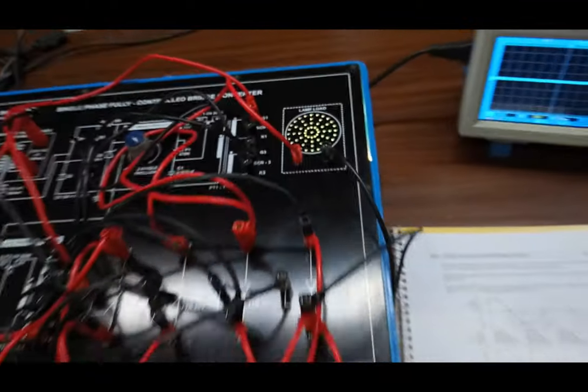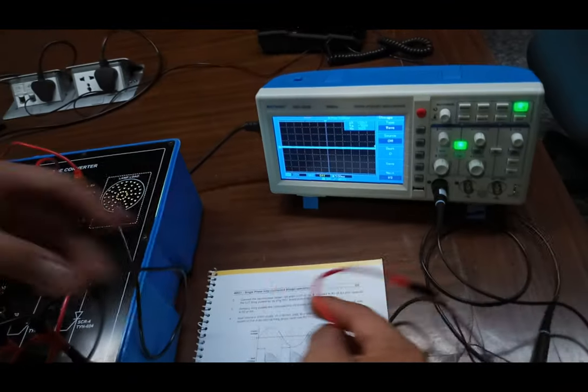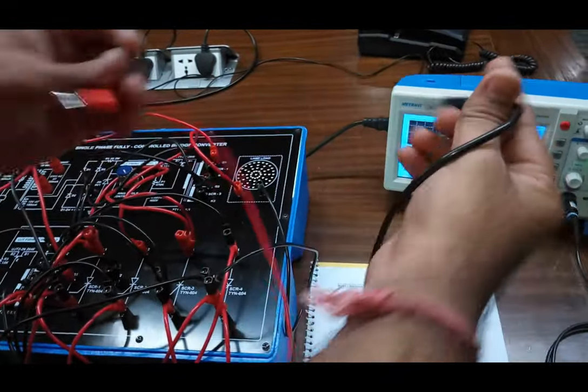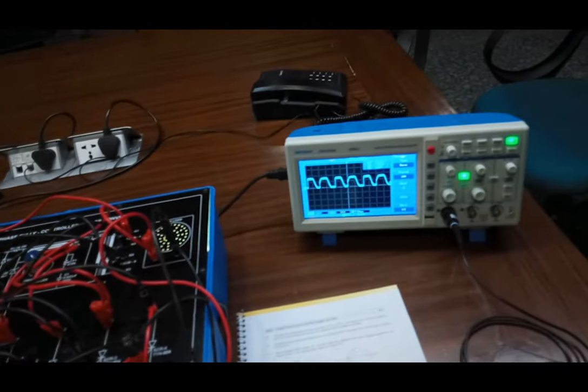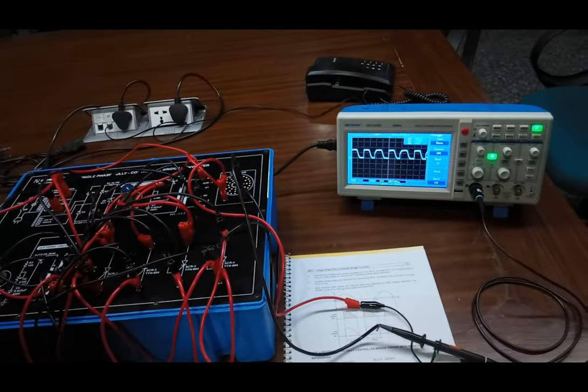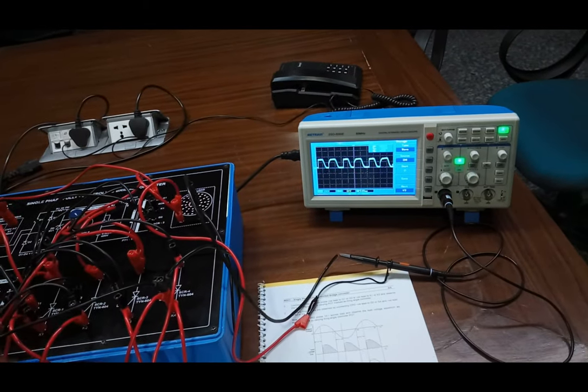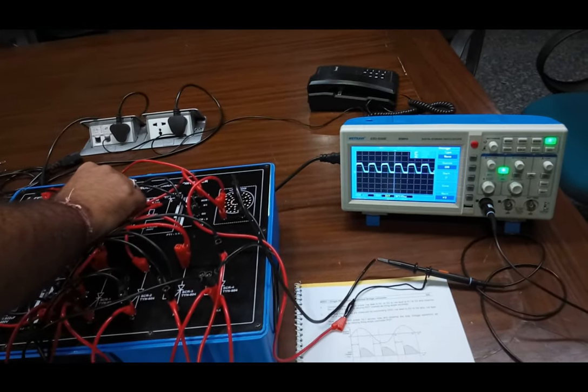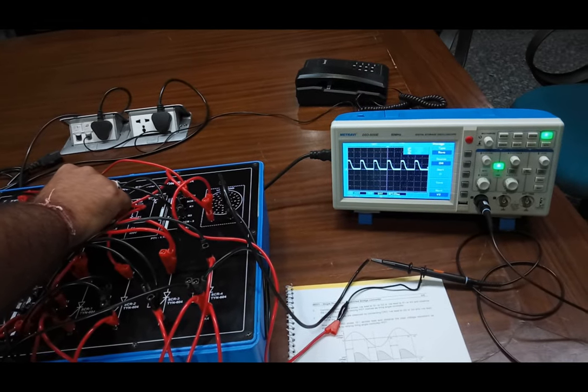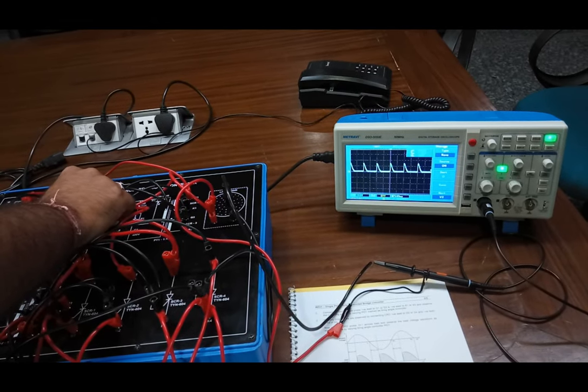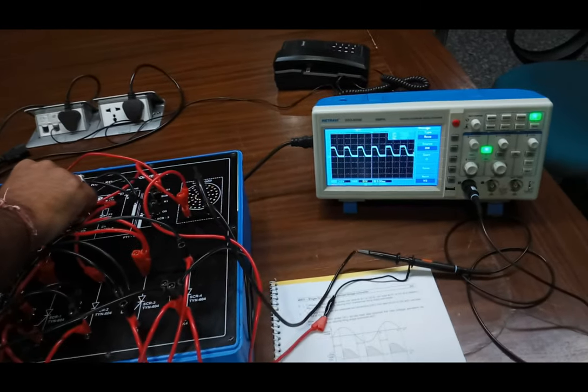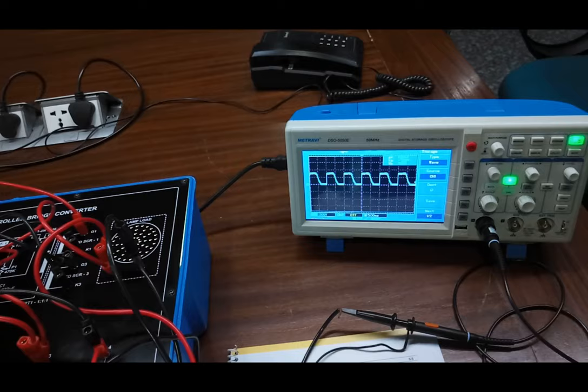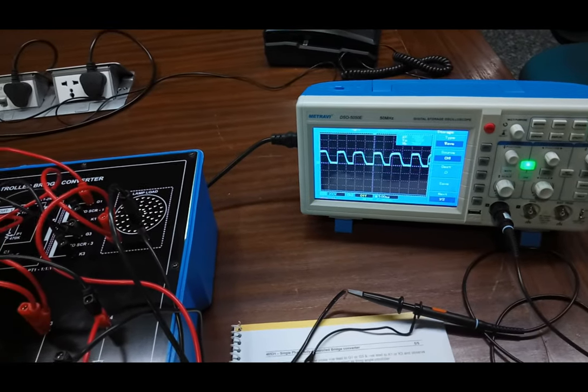To observe the output waveform, we will connect CRO across the load and we will see the output waveform at the CRO. As we move the firing angle, the waveform varies simultaneously. That's how we control the load with this firing circuit and SCR bridge converter.